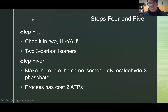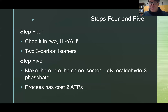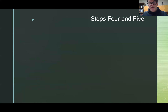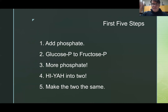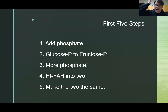By the way, this first half of the process has cost two ATPs — that's where the phosphates came from. We were adding phosphate and getting them from two ATPs. So to summarize phase one: add some phosphate, switch the isomer, add more phosphate, hi-yah, and then make them both the same.